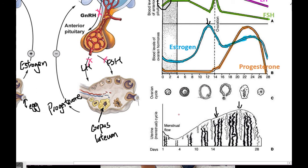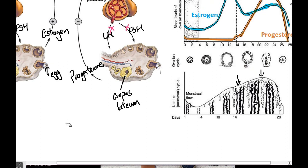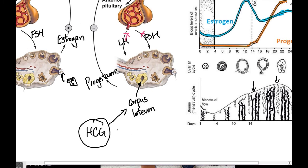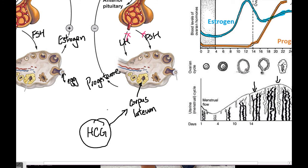What happens if someone does get pregnant? As the placenta is developing, it forms a hormone called HCG, and what HCG does is help maintain the corpus luteum a little longer until the placenta is fully formed. When the placenta is fully formed, it takes over the production of estrogen and progesterone, because the thickness of the endometrium must be maintained throughout the entire pregnancy to support the growing baby — and that is the function of the placenta.